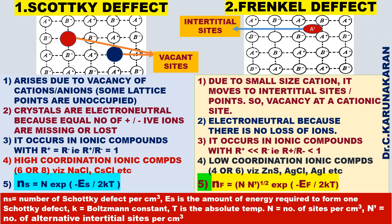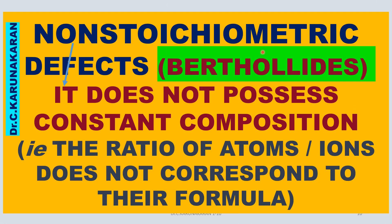What are non-stoichiometric defects? We have seen stoichiometric defects. Non-stoichiometric compounds are also called bertholides, whereas stoichiometric compounds are called daltonites. Non-stoichiometric compounds do not have fixed or constant composition. The ratio of atoms or ions does not correspond to their ideal formula.